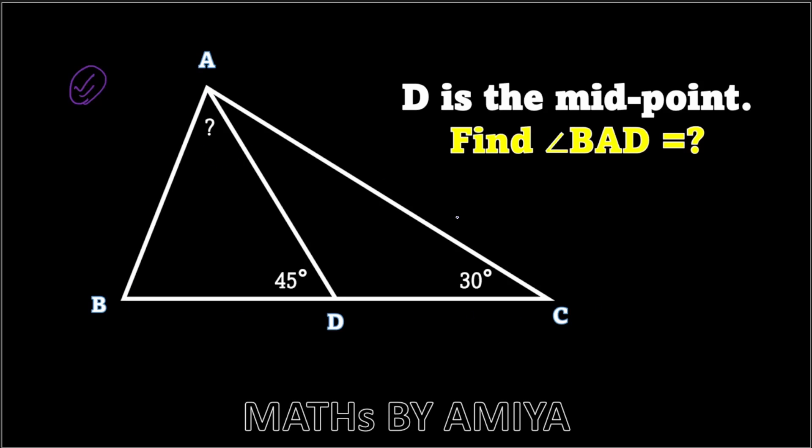We have a triangle ABC where D is the midpoint of side BC. Angle ABD is 45 degrees. Angle ACD is 30 degrees. Then we need to find the measurement of angle BAD.